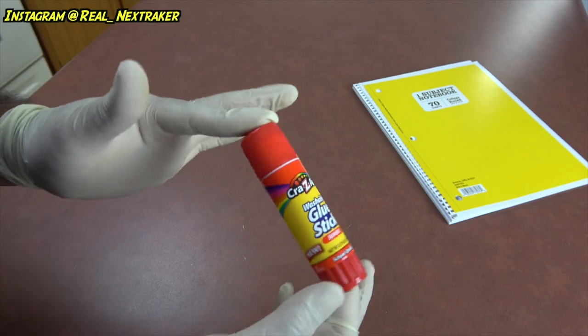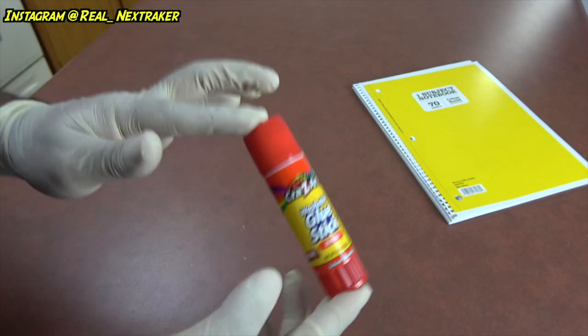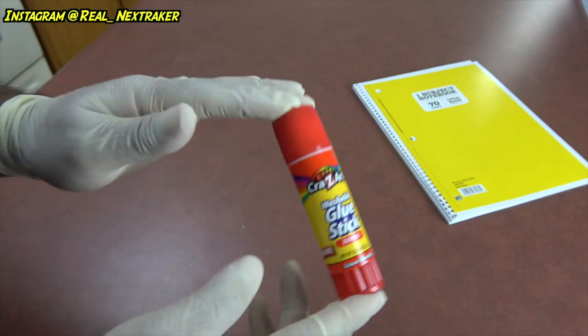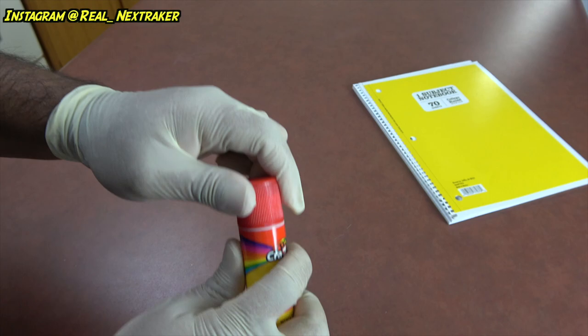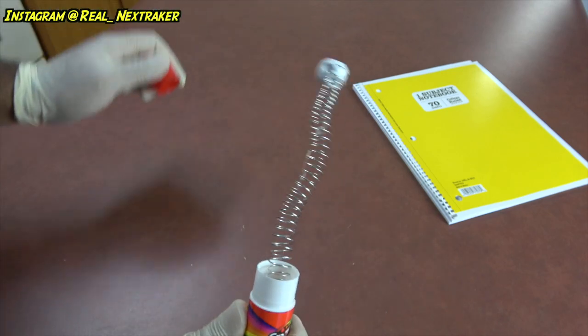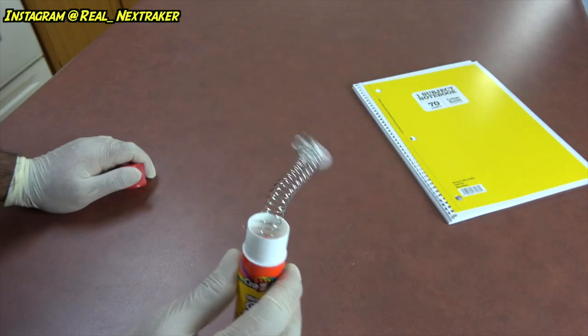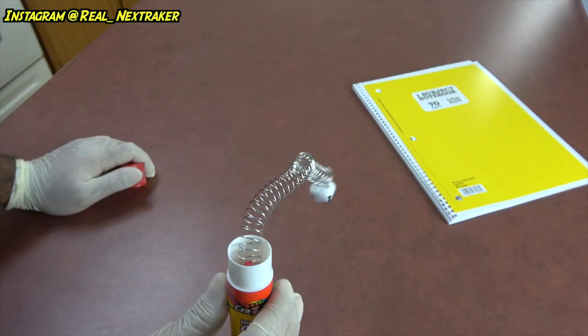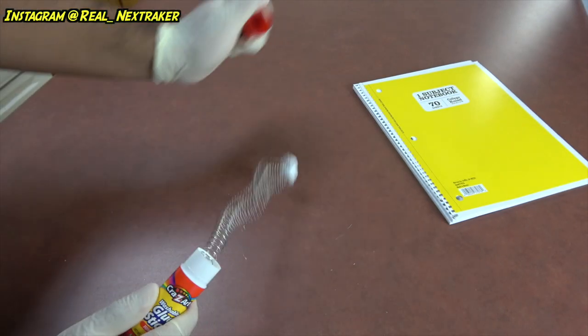Basically, how it works is next time someone asks to borrow your glue stick, you give them the booby trapped one and they will be in for a surprise they didn't expect. When they remove the cap, the little bell that's attached to the spiral will pop out. This is so simple and easy to make as you just saw. It doesn't take up a lot of time. It's a great way to kill some time in the classroom.